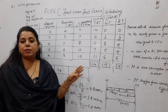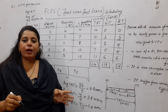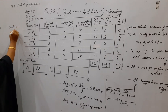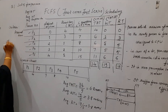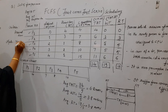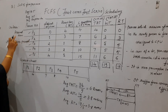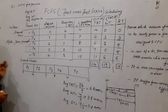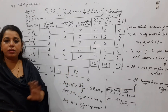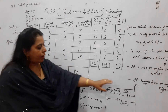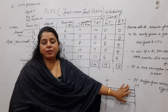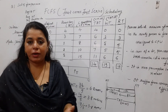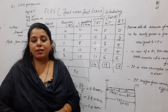One more thing to remember: the scheduling criteria for FCFS is arrival time, and the mode of operation is non-preemptive — once assigned, the process completes its job and then exits. One disadvantage is that it suffers from the convoy effect: if processes with more burst time arrive first, then processes with smaller burst time have to wait longer to get their turn.